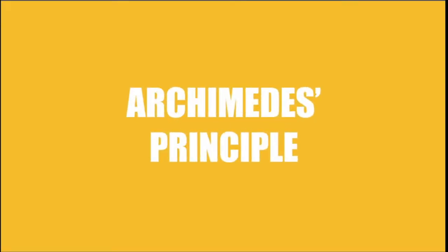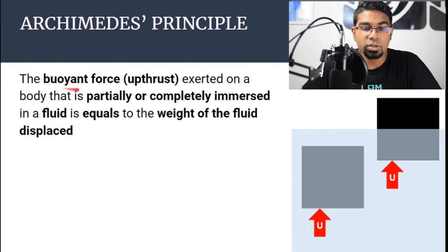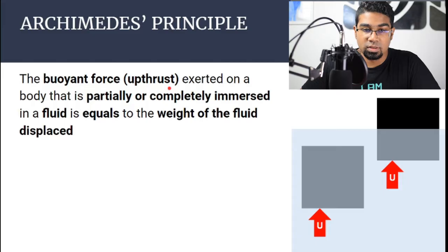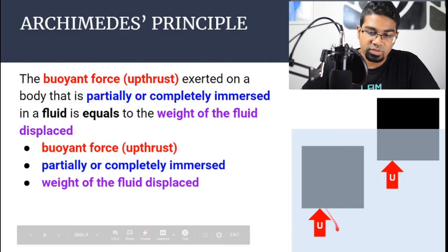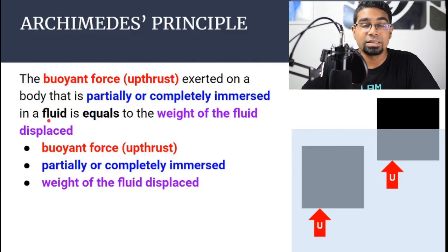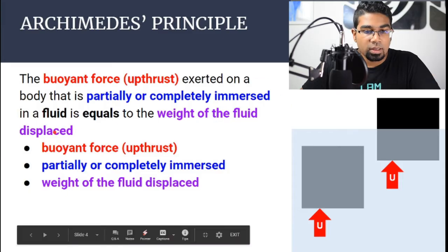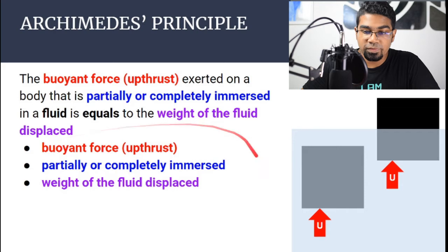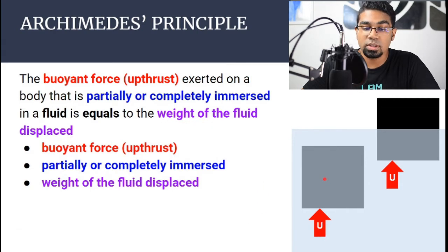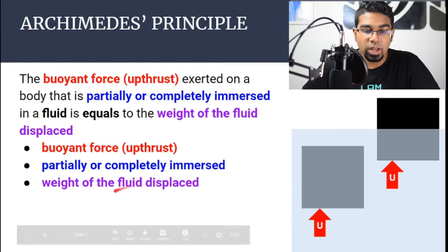Let's start by defining what Archimedes' principle is. Archimedes' principle states that the buoyant force exerted on a body that is partially or completely immersed in a fluid is equal to the weight of the fluid displaced. The buoyant force, also called upthrust, is a force that acts upwards on a body that is partially or completely immersed in a fluid — normally water, but it can also apply to air, since liquids and gases are both fluids.